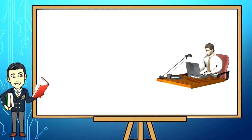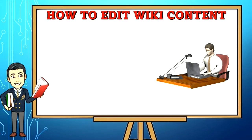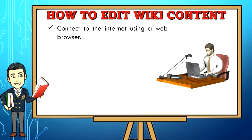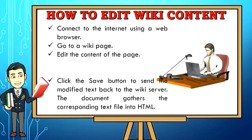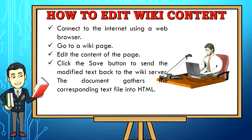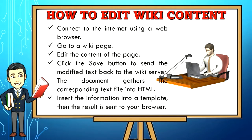The following are the steps on how to edit wiki content. Step 1: Connect to the internet using a web browser. Step 2: Go to a wiki page. Step 3: Edit the content of the page. Step 4: Click the save button to send the modified text back to the wiki server. The document gathers the corresponding text file into HTML5, inserts the information into a template, then the result is sent to your browser.